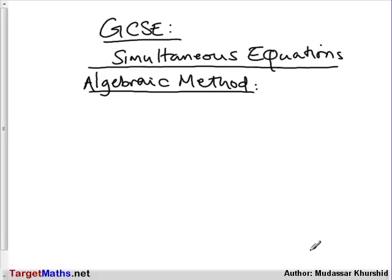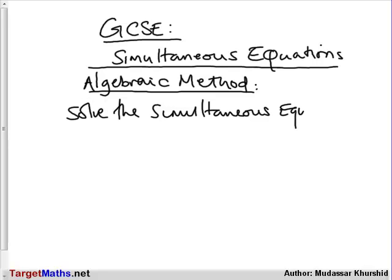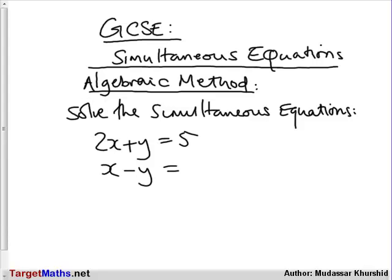GCSE Simultaneous Equations — Algebraic Method. Solve the simultaneous equations: 2x plus y equals 5, and x minus y equals 1.